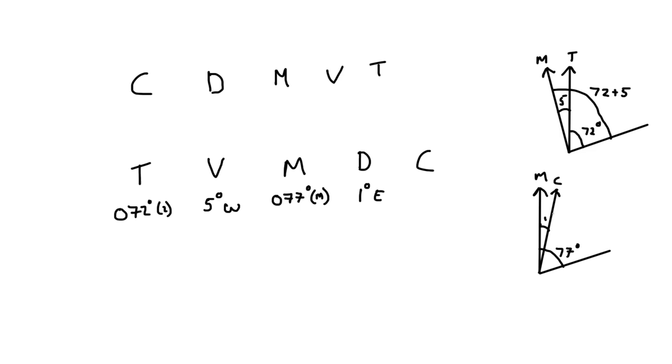We've already said that it was 077 degrees from magnetic north, which means this whole angle here is 77 degrees. So we can immediately see that from the compass to our heading, it's going to be 1 degree less. So it's going to be 76 degrees, giving us the compass heading of 076 degrees compass.